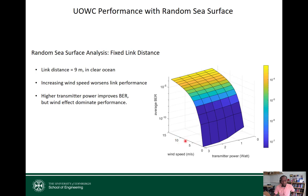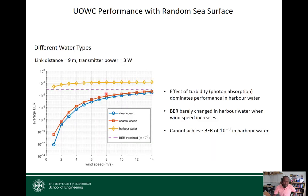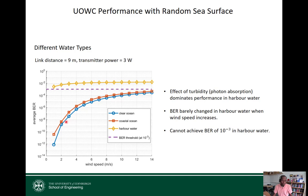We also want to understand the impact of random sea surface on different water types: clear ocean, coastal water, and harbor water. Harbor water is highly turbid with heavy scattering and high attenuation, so the received signal power is already weak. In clear water, transmission is good and we get a strong signal, but BER deteriorates as wind speed increases. Similarly for coastal water, as wind speed increases BER degrades.